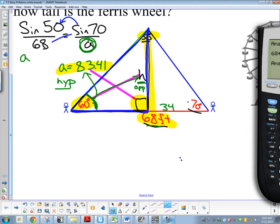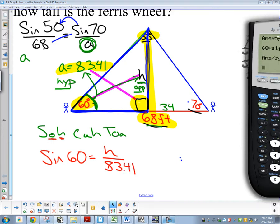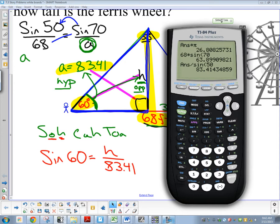So, hypotenuse, opposite, SOHCAHTOA, opposite and hypotenuse sine of my angle equals the opposite H over my hypotenuse 83.41. If you would have done the Law of Sines on this problem, same answer. It's good to know how to do both. So, to solve this problem, Darius, what am I going to have to do? 83.41. Yep. Just multiply by 83.41 times sine of 60. Get rid of this 83.41 in the bottom.